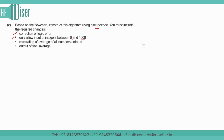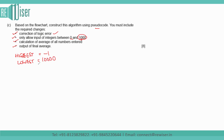Part C of the question: construct this algorithm using pseudocode based on the flow chart. You must include the required changes: correction of the logical error, only allow input of integers between 0 and 1000 — for which you will be doing a range check — calculation of the average of all numbers entered, and output of the final average. For the correction, we set the value of highest to -1 (a very low value) and lowest to 10000 (greater than 1000, since inputs are between 0 and 1000), and counter to 0.